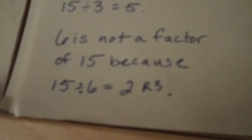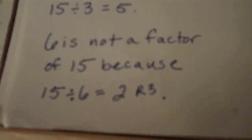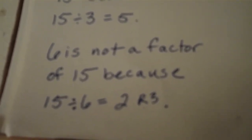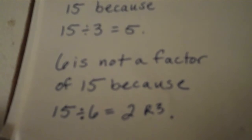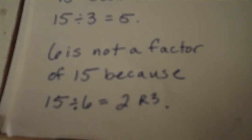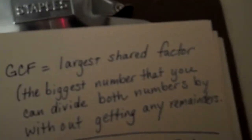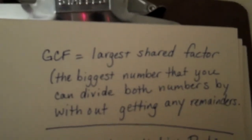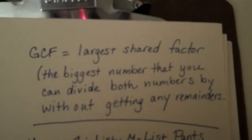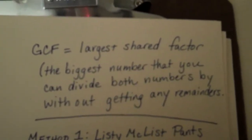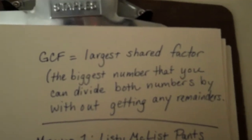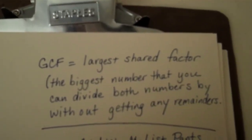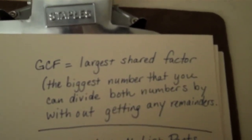However, six is not a factor of fifteen because fifteen divided by six equals two remainder three. So, the greatest common factor is the largest shared factor. In other words, it's the biggest number that you can divide both numbers by without getting any remainders.